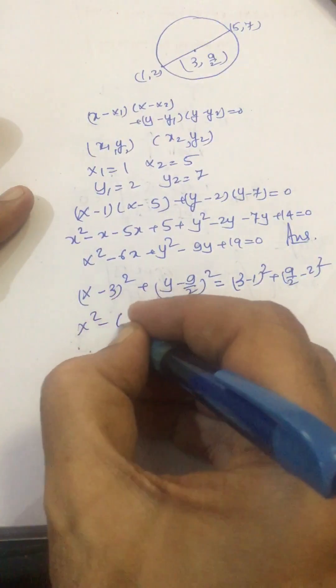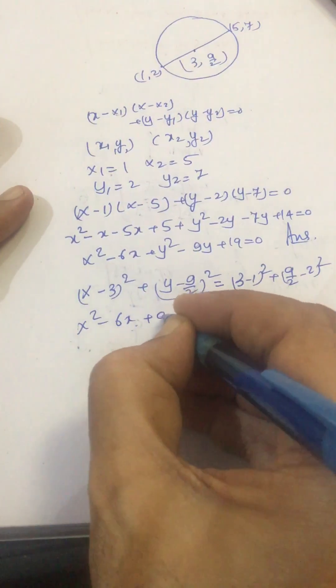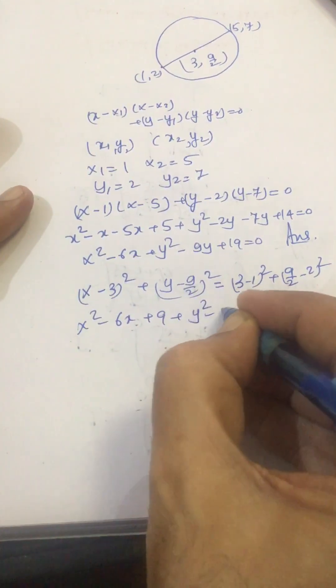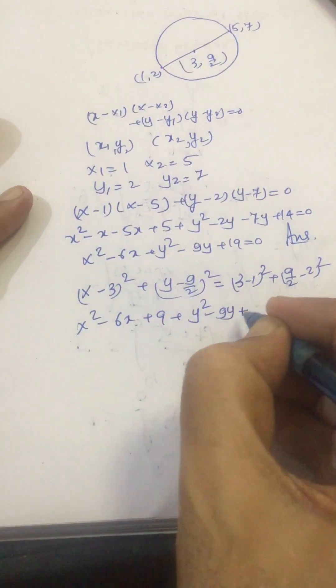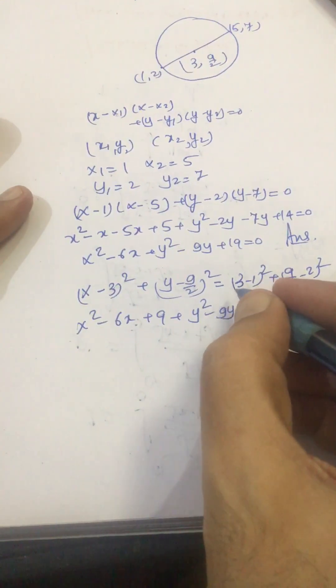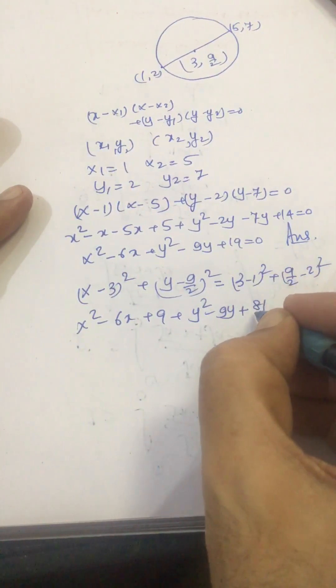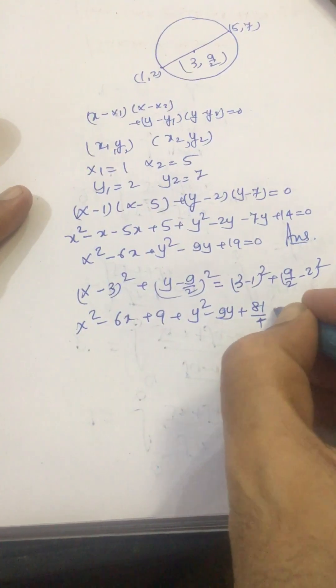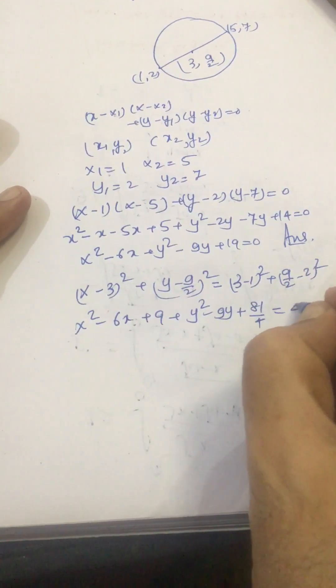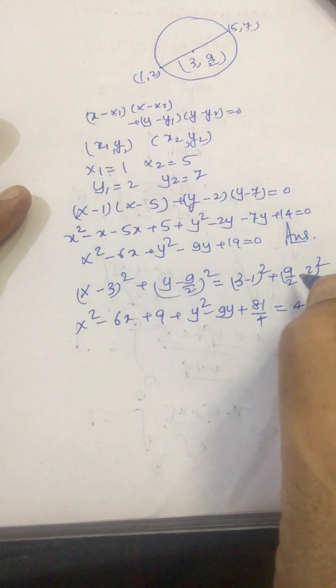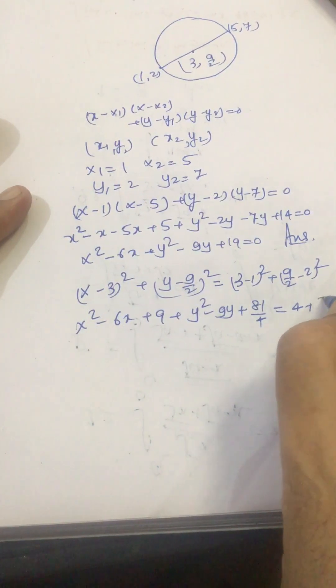Now, this we can simplify: x² - 6x + 9 + y² - 9y + (9/2)² = (3 - 1)² + (9/2 - 2)² = 4 + (5/2)².